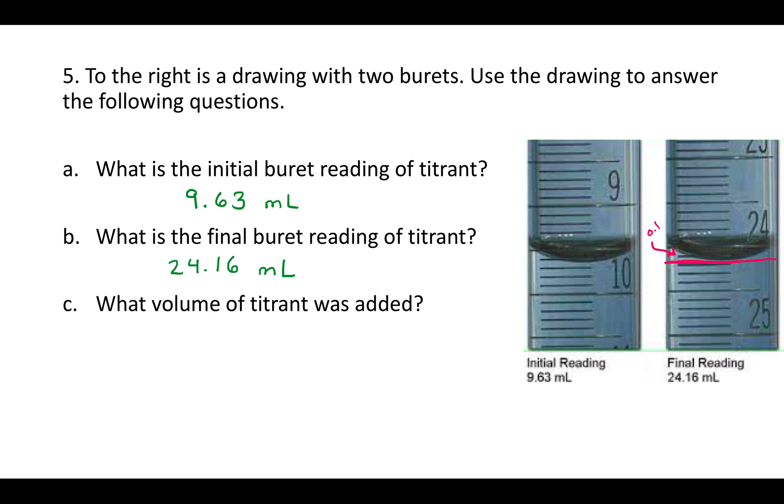Part C says what volume of titrant was added. We're just going to take the final reading and subtract the initial reading. So, 24.16 milliliters in this case, minus 9.63, and that would give us 14.53 milliliters. That would be the amount, the volume of titrant that was added.